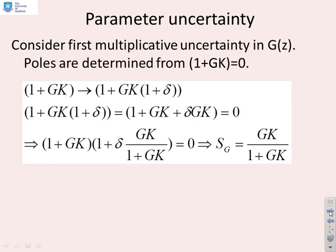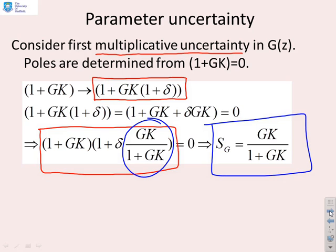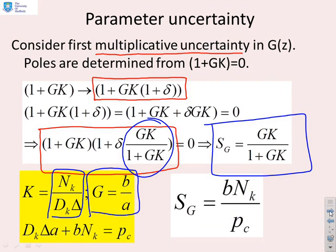For parameter uncertainty, we're going to consider just multiplicative uncertainty — you can do additive uncertainty yourself. If I assume multiplicative uncertainty, then the closed-loop pole polynomial ends up being something like 1 plus GK times 1 plus delta, and you set that equal to zero to find the closed-loop poles. Standard analysis shows the sensitivity can be rewritten as GK over 1 plus GK. Substituting in our control law NK over DK delta, with the system B over A, you can compute the sensitivity to multiplicative uncertainty and sketch the Bode diagram.